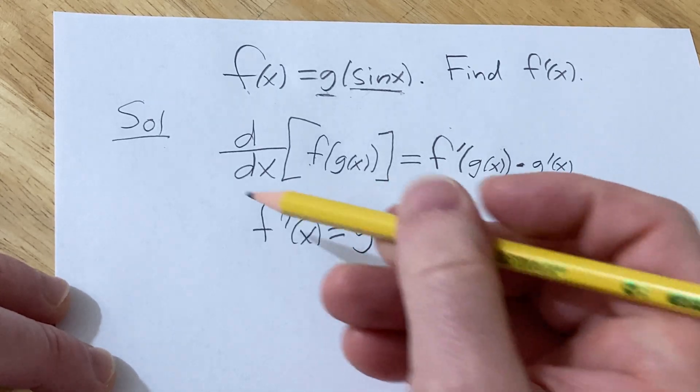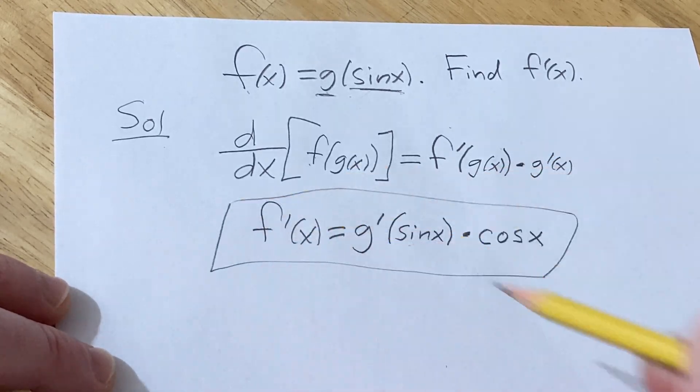That's pretty much it. That's going to be the final answer. So again, you take the derivative of the outside, leave the inside untouched, and then times the derivative of the inside.